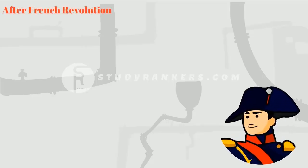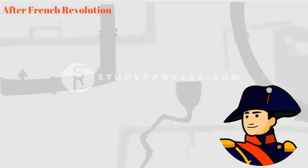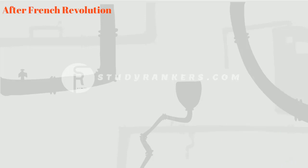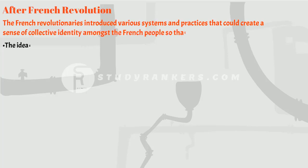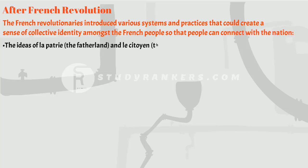The French Revolution happened in 1789, which led to the transfer of sovereignty from the monarchy to a body of French citizens. After gaining power, the French revolutionaries introduced various systems and practices that could create a sense of collective identity amongst the French people, so that people could connect with the nation — such as the idea of La Patrie, the fatherland, and Les Citoyens, the citizen.